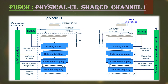Similar to PDSCH in the downlink, PUSCH is the shared channel in the uplink. It carries user data transferred from the device to the base station. The steps in PUSCH are just the reverse of the steps in PDSCH — in PDSCH, user data comes from the higher layer like the MAC layer and passes to the lower layer.